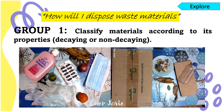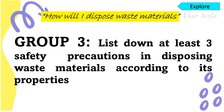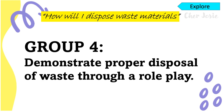And now, let's have your activity. It is entitled, How Will I Dispose Waste Materials? For Group 1, you're going to classify materials according to its properties, whether it is decaying or non-decaying. For Group 2, you're going to list down three materials under Kitchen Waste, Garden Waste, and Factory Returnable. For Group 3, you're going to list down at least three safety precautions in disposing waste materials according to its properties. For Group 4, you're going to demonstrate proper disposal of waste through a role play. Are you ready?